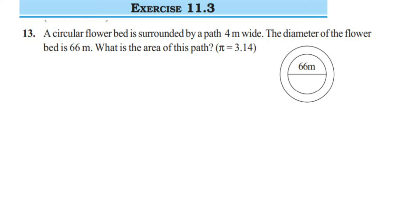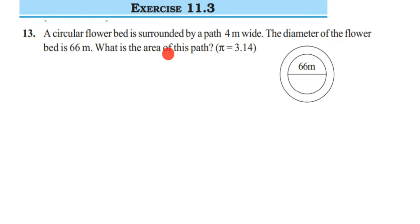Hey everyone, here is exercise 11.3, 13th question. This is from the perimeter and area chapter of class 7. The question is: a circular flower bed is surrounded by a path 4 meters wide. The diameter of the flower bed is 66 meters. What is the area of this path? Take pi as 3.14.